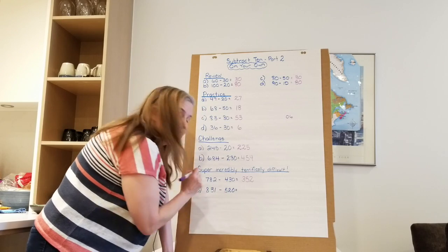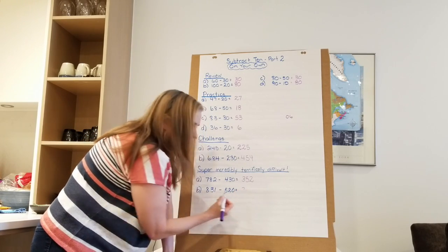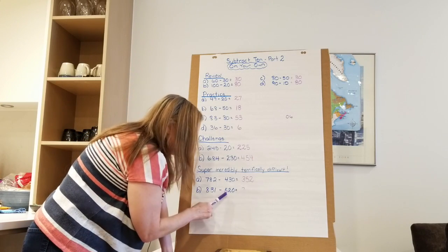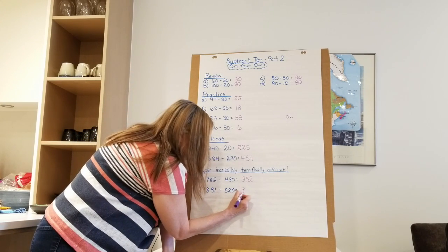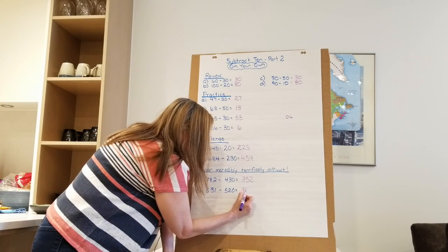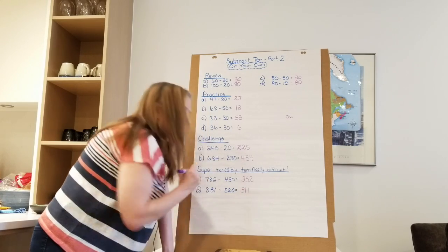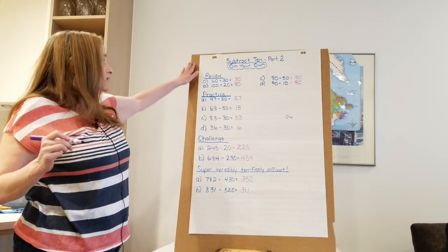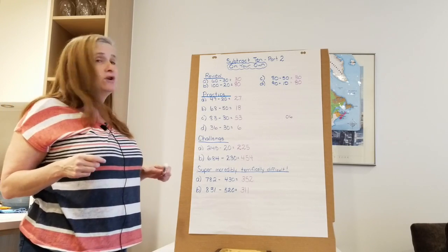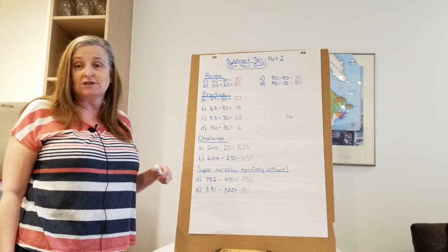All right. 831 take away 520. I have 8 tens take away 5 tens. Not tens. I'm not right this time. I have 8 hundreds take away 5 hundreds, which is 3 hundreds. Then I have 3 tens take away 2 tens, which is 1 ten. And I have 1 one and 0, which leaves me with 1, 311. So have a look at your work, see if you need to fix any of it up. If you need to do more practice, have your mom or dad make some more questions, or you make some more questions for yourself.